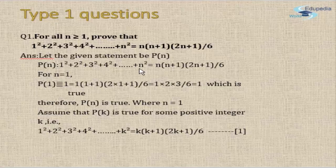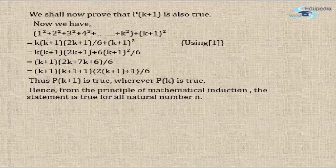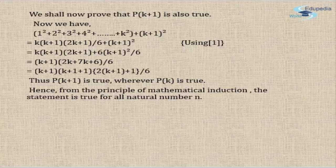Next, we prove it for k. We replace n with k, giving us the sum up to k squared equals k(k+1)(2k+1) divided by six — call this equation one. The third step is to prove it for k+1. The series becomes the sum up to k squared plus (k+1) squared. We take equation one and add the (k+1)² term, giving k(k+1)(2k+1)/6 plus (k+1)².